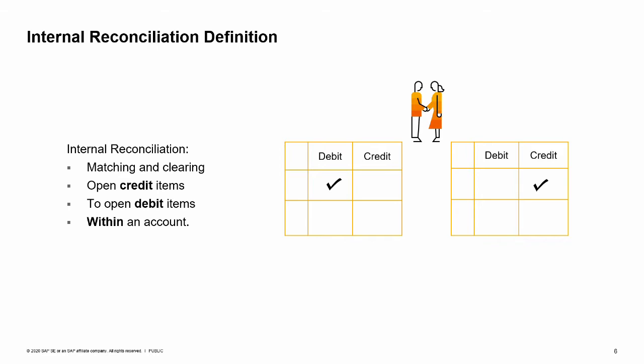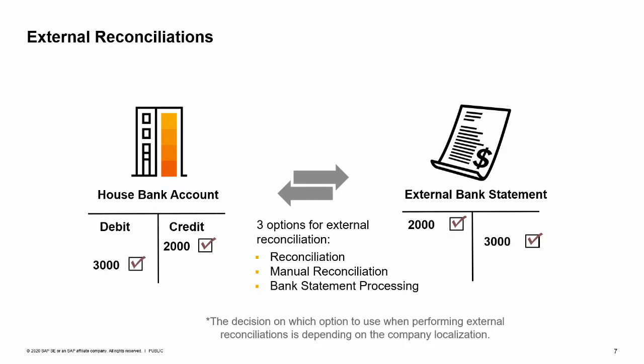When using a bank interim account, an outgoing payment to a vendor made by the payment wizard (debit) must be followed by a transfer posting to the bank GL account (credit). In SAP Business One you have three options for performing external reconciliation: reconciliation, manual reconciliation, and bank statement processing. Note that these are the names of the windows in SAP Business One. To avoid creating duplicate reconciliations, the user should choose one option and use it to perform external reconciliations. This decision depends on the company localization.